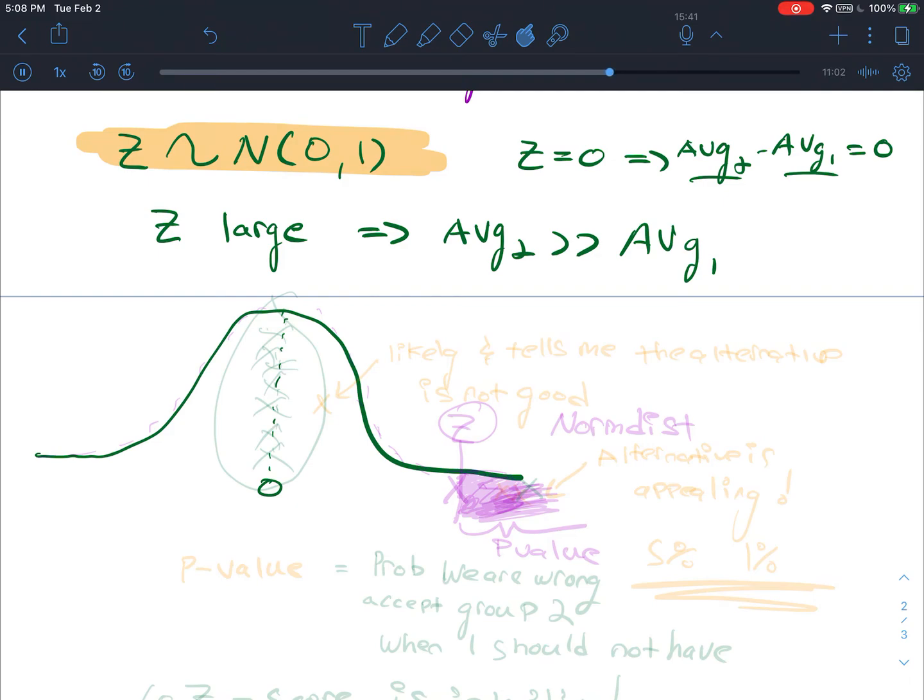And this makes sense. This tells us that, on average, the majority of our z-scores should be about 0. So I should, on average, observe more things here. And I would only believe that my assumption that the averages are different is true if I observe a z-score that's highly improbable. And that would mean that I observe a z-score maybe out here, in one of these tail locations. If I observe a z-score here, I would say that this is likely and tells me the alternative is not good. So I probably would not accept that. But if I observe one here, this means the alternative is appealing.